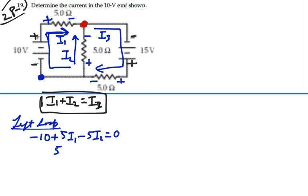So that means that 5I2 is equal to 5I1 minus 10, or I2 is equal to I1 minus 2.